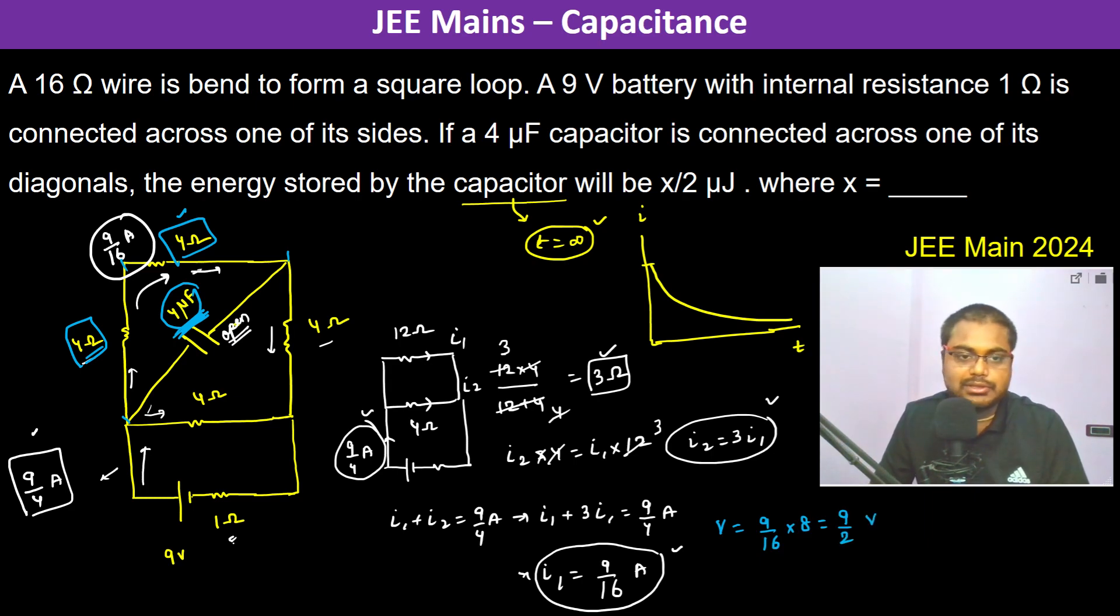So therefore the energy stored is going to be half CV square. So half into 4 microfarads into V square, so 81 by 4 volt square.